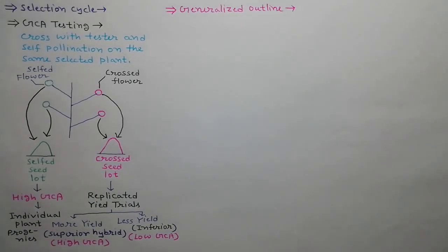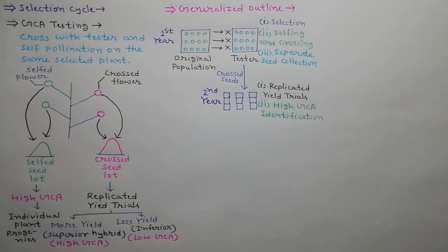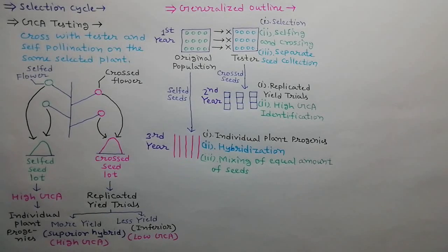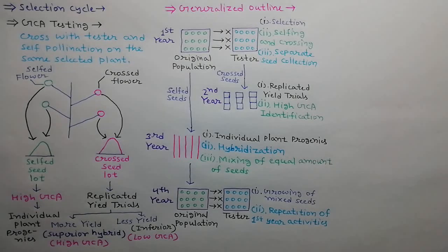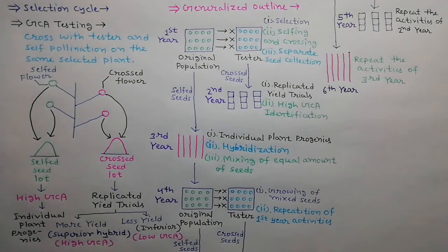The generalized outline for recurrent selection for GCA is as follows. In the first year, superior plants are selected; self-pollination and crossing with a tester plant are both allowed on the same parent plant, and seeds are collected separately. In the second year, crossed seeds are used to perform replicated yield trials and parents showing high GCA are identified. In the third year, individual plant progenies are developed from selfed seeds; crosses are allowed in all possible combinations, and equal amounts of seeds from each cross are mixed. In the fourth year, the seed mixture is grown and activities of the first year are repeated. In the fifth and sixth years, the activities of the second and third years are repeated respectively.